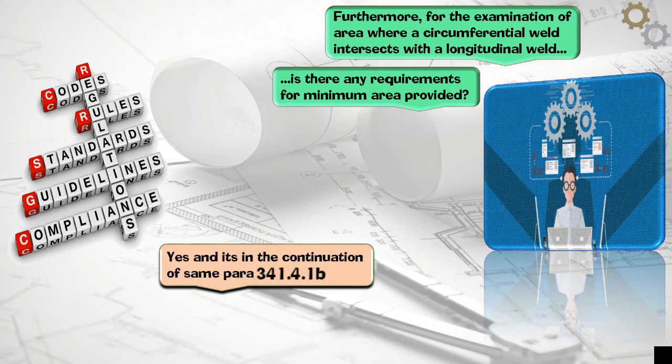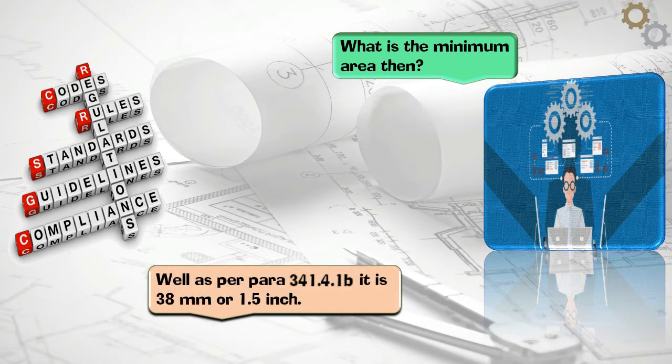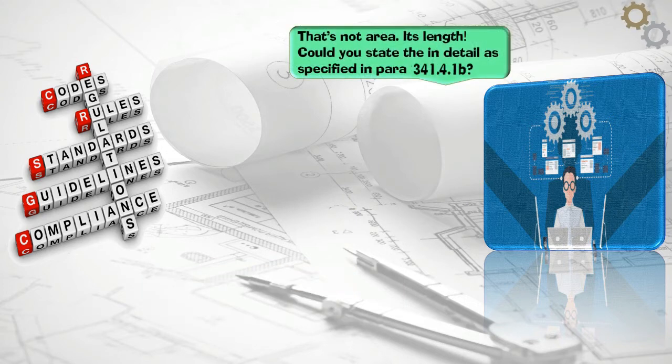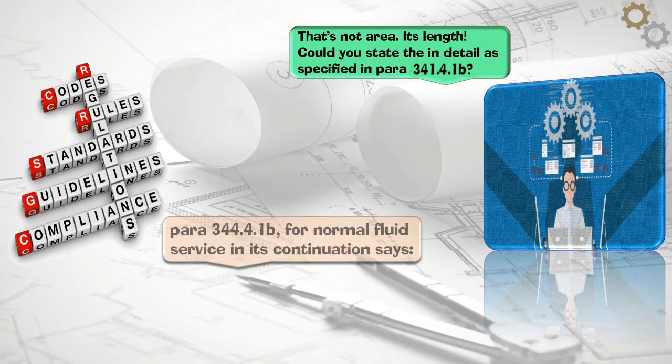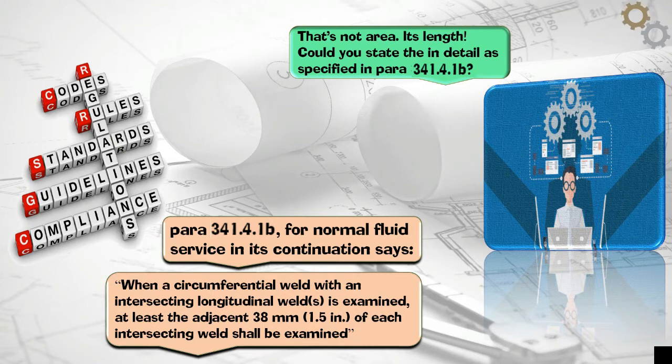Yes and it's in the continuation of same PARA 341.4.4b. What is the minimum area then? Well as PARA 341.4.4b it is 38mm or 1.5 inch. That's not area, it's length. Could you state the in detail as specified in PARA 341.4.1b? For normal fluid service in its continuation says, when a circumferential weld with an intersecting longitudinal weld is examined, at least the adjacent 38mm, 1.5 inches, of each intersecting weld shall be examined.